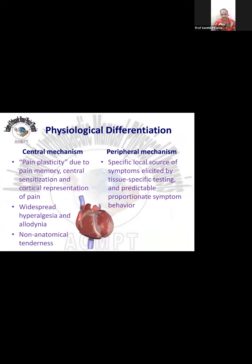Physiological differentiation identifies central versus peripheral mechanisms. Widespread symptoms and non-anatomical tenderness — tenderness everywhere on palpation — suggest central sensitization. Peripheral mechanisms are specific to movement testing with proportionate symptom behavior: deep pressure palpation causes pain, and activity after some time provokes pain. In central mechanisms, pain appears and disappears unexpectedly and suddenly — this kind of presentation indicates central mechanisms.